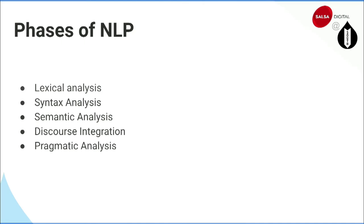Semantic analysis gives you a sentence with proper meaning. For example, 'my mobile is eating a banana' — with semantic analysis, this sentence can be discarded because it's not a logical sentence. Then we do discourse integration, which is about getting the reference or context of the whole text.